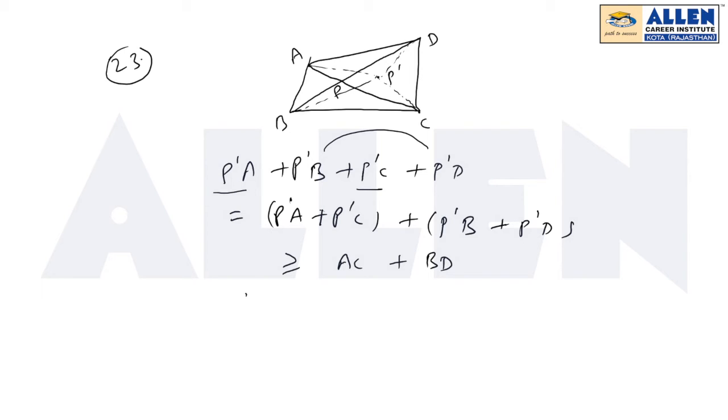AC plus BD is constant, which means ABCD is a fixed quadrilateral. So its minimum value will be AC plus BD, but equality holds when both equalities hold, which means P' must lie on AC and P' must also lie on BD. Because in the triangular inequality, equality holds when all three points become collinear. Both will occur simultaneously when P' is the point of intersection of AC and BD.